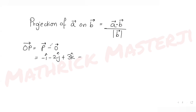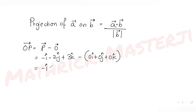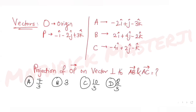P vector is minus i minus 2j plus 3k, and O vector is 0i plus 0j plus 0k. So OP becomes minus i minus 0i, which is minus i, minus 2j minus 0j, which is minus 2j, plus 3k minus 0k, giving us OP equals minus i minus 2j plus 3k.